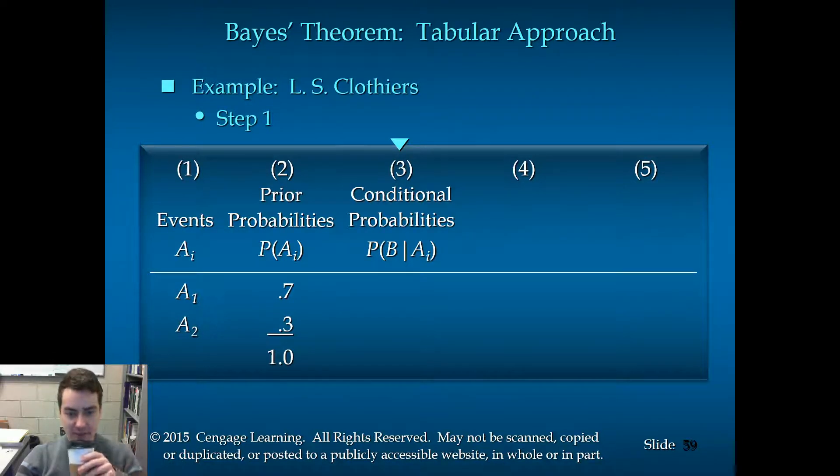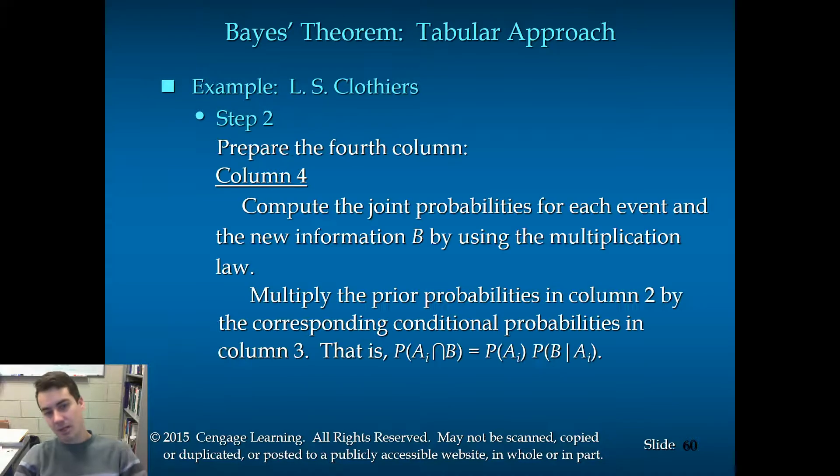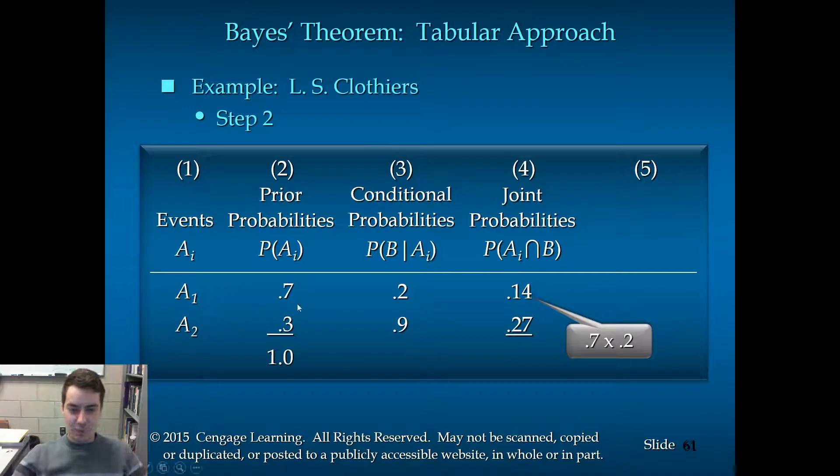Now, conditional probabilities. These were also given to us. 0.2 and 0.9 for the probability of B given AI. So, we just write these in. They were given to us. Write them in. How about column four? Well, this is step two. So, step one, write in your input data, I guess, and build the table. Build the table. Write in your data. Step two. Prepare the fourth column. Column four is done by computing the joint probabilities for each event and the new information B, using the multiplication law. Which means, we're just multiplying the prior probabilities in column two by the corresponding conditional probabilities in column three. That's the multiplication law. So, literally, it's just multiply column two by column three. In this case, 0.7 times 0.2, 0.14. 0.3 times 0.9, 0.27. It's as simple as multiplication.